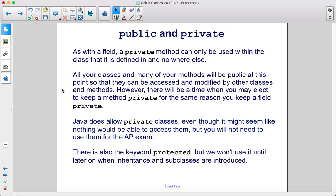As with a field, a private method can only be used within the class that it is defined in and nowhere else. All your classes and many of your methods will be public at this point so that they can be accessed and modified by other classes and methods. However, there will be a time when you may elect to keep a method private for the same reason you keep a field private.